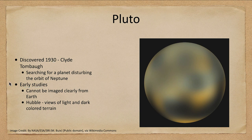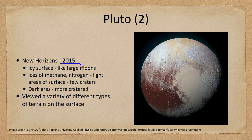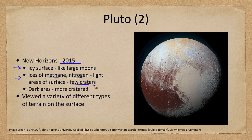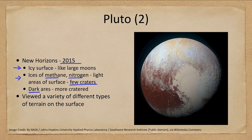In 2015, Pluto was visited by the New Horizons spacecraft. We found it had an icy surface, with ices of methane and nitrogen — pretty much expected for that part of the solar system. What was not expected was that some regions had very few craters, indicating an active object where certain areas have been wiped clean. The darker areas are more heavily cratered, which is actually the reverse of our Moon, where the darker areas are less cratered.